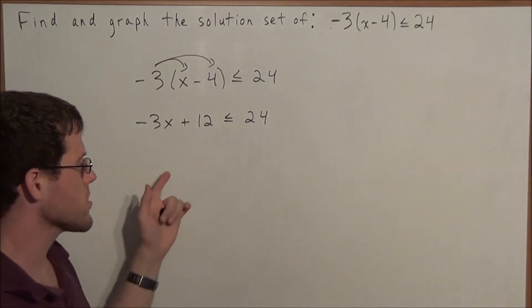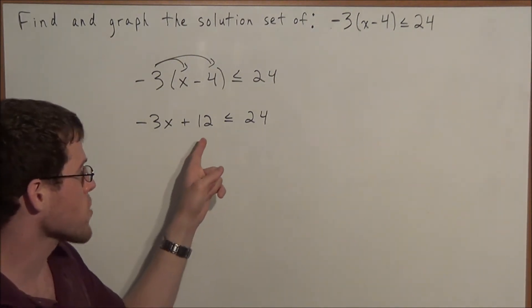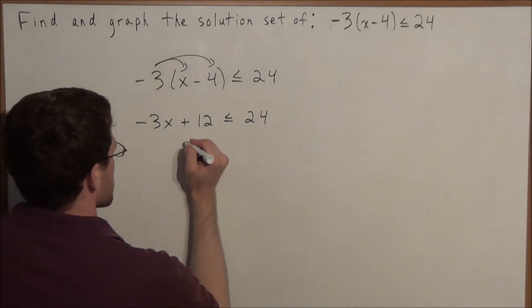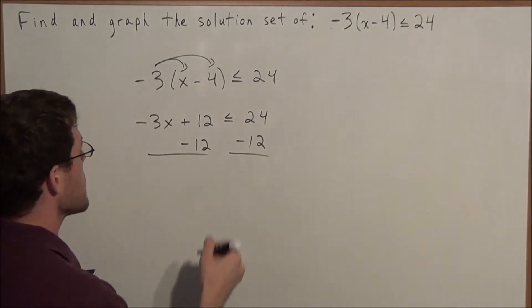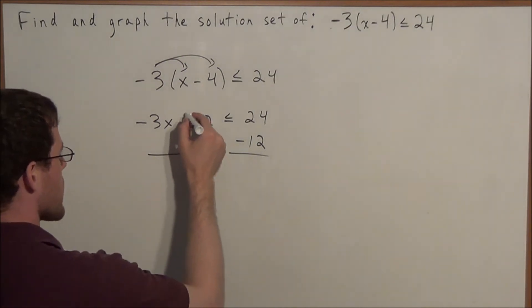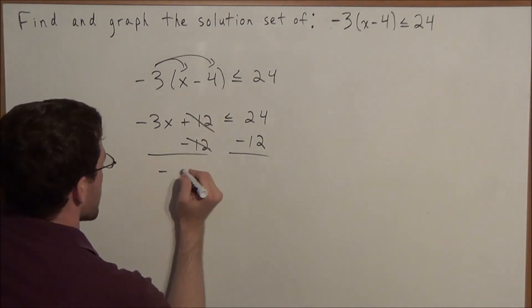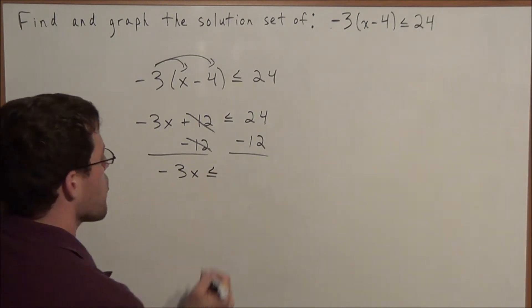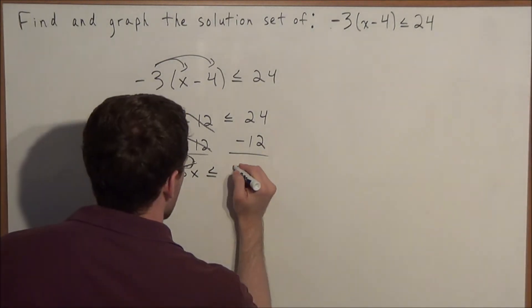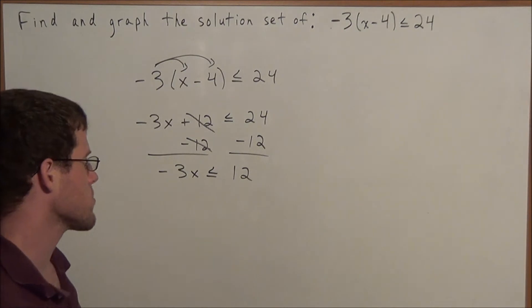Now we can still treat this like a regular algebra equation and subtract 12 from both sides. So we subtract 12 from the left and from the right side of this inequality. 12 minus 12 will cancel, and 24 minus 12 is 12. So we have -3x ≤ 12.